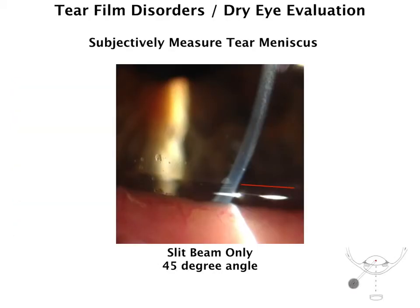The next part of the dry eye evaluation is looking at the tear meniscus. The best way to do that, as you can see from the diagram on the lower right-hand side, is to have the slit lamp facing directly towards the eye straight on and having the slit beam at a 45-degree angle. It's going to be a very intense, narrow slit beam. The reason this works is because it allows a birefringence of the tear meniscus, as you can see in the lower part of the picture.